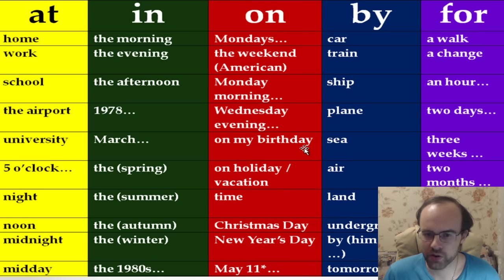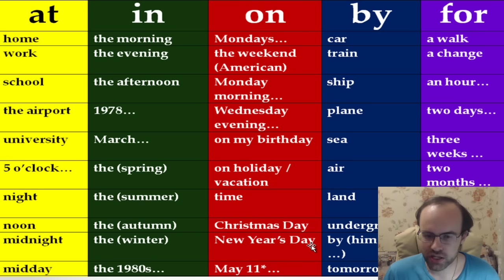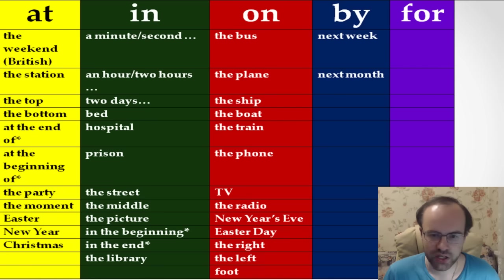We say on my birthday — we use 'on' because of the implied 'day'. On holiday in British English, on vacation in American English. And for Christmas Day and New Year's Day we use 'on' because of the word 'day': on Christmas Day, on New Year's Day, on Easter Day. But without 'day': at Easter, at New Year, at Christmas.